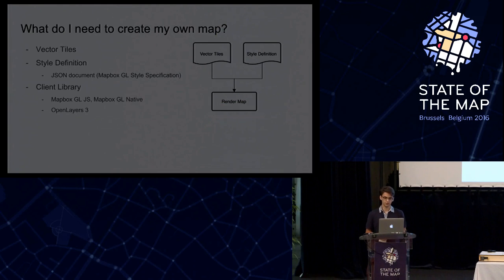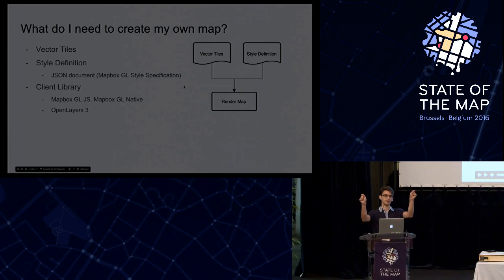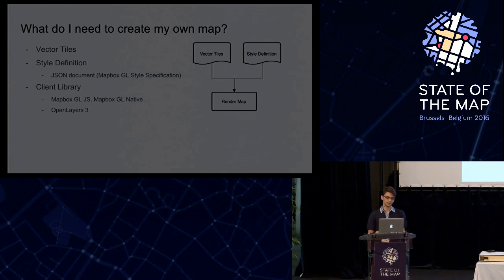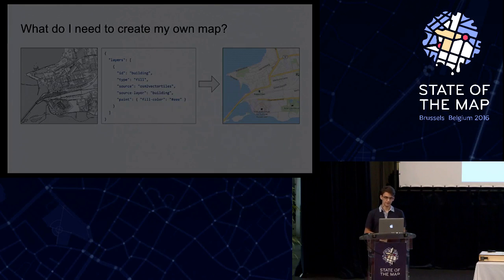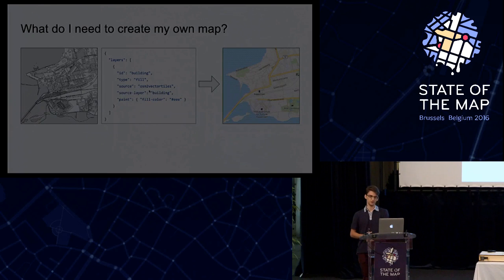If you want to create your own map, you need these vector tiles and a style. The style is a JSON document — I'll be talking about the Mapbox GL style specification. You have these two things, and then you need a client to render them into an image. Mapbox GL works very well on all platforms, and OpenLayers 3 has support for it as well. For example, you give buildings a gray color in the style description and the renderer turns them into a nice image on your device.